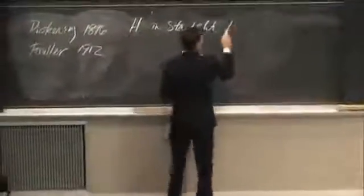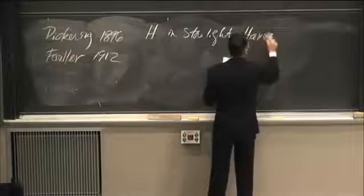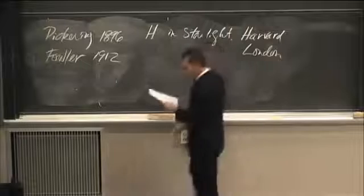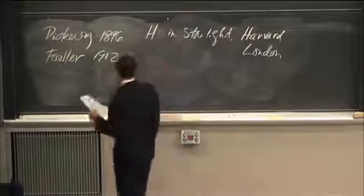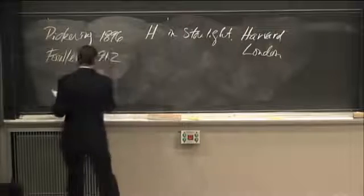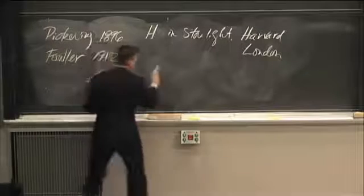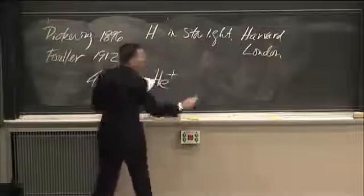So this guy's at Harvard and the other guy's at London. Well Bohr looks at this stuff and he says, you guys are wrong. You guys are wrong. Your lines are off by a factor of 4x. You got the right series, but you got the wrong element. What you guys are looking at is helium plus.